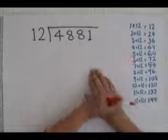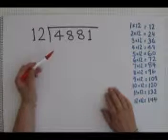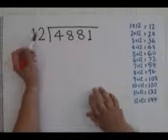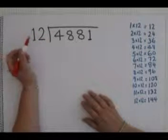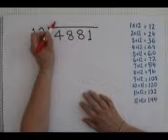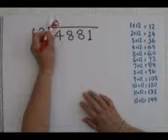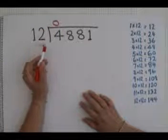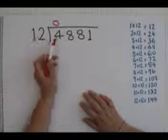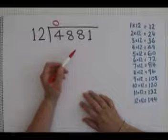Remember to write your times table down the side of the page to help you with your multiplication. We will start this sum by saying how many times does 12 fit into 4? You can't fit 12 into 4 as 4 is too small. So we can write a 0 up there and then we say to ourselves how many times does 12 fit into 48?